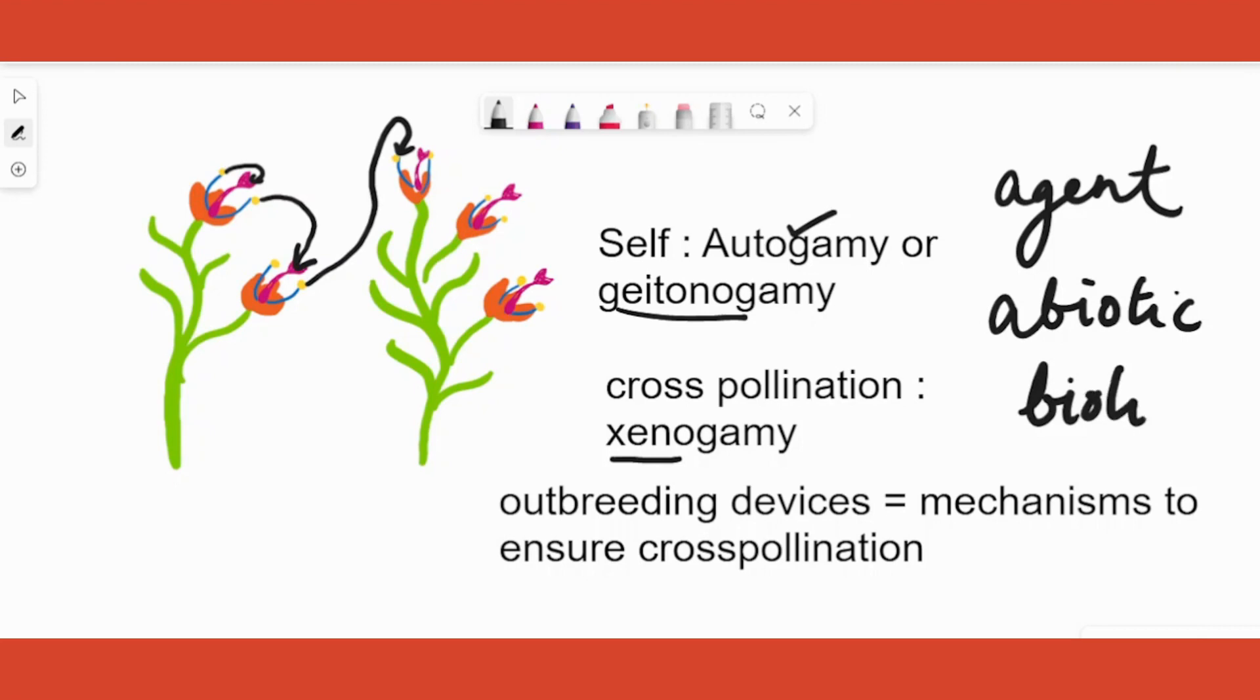Another concept that they will cover is outbreeding device. The word you hear and then you get almost two marks in every question paper. Outbreeding means cross pollination. The plant wants to do cross pollination preferably, it prefers cross pollination because of two reasons.